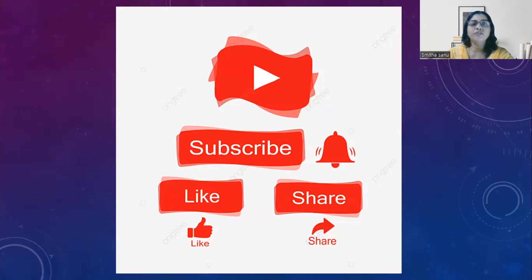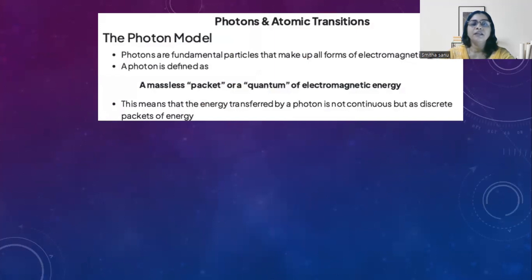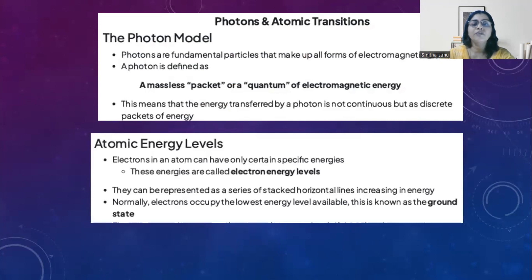Before going into detail of solving IB study questions, let's revise a few important points that would help in solving the questions. The first point: every radiation in the electromagnetic spectrum is made of photons. Photons are basically packets of energy which have a discrete or specific value, and hence a specific energy is associated with that packet. So whenever an electron is receiving or emitting a photon, it moves to a discrete energy level.